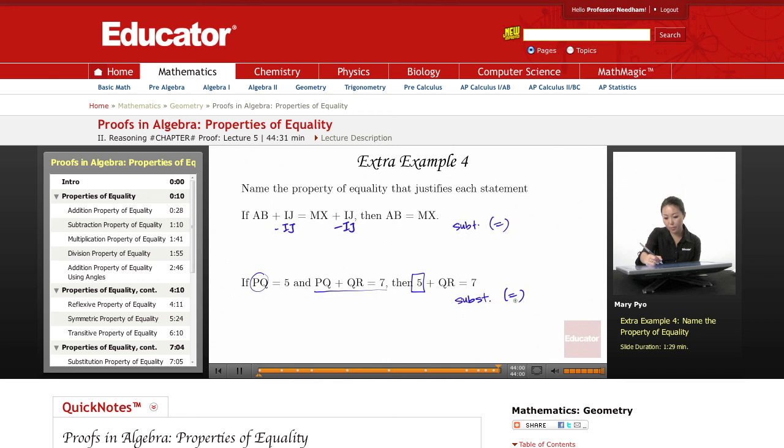Okay, be careful when you're writing subtraction and substitution. It would probably be best to just write out the whole word. But if you're going to write it like this, then make sure it's obvious what you're writing. Subtraction property, substitution property.